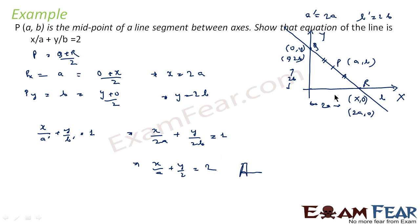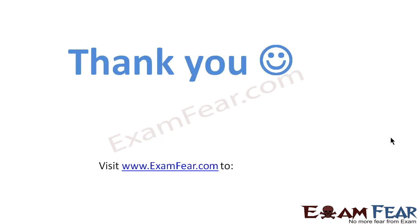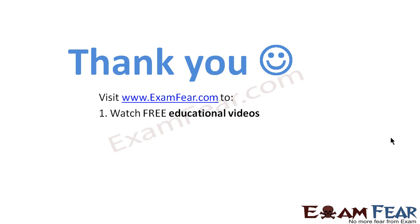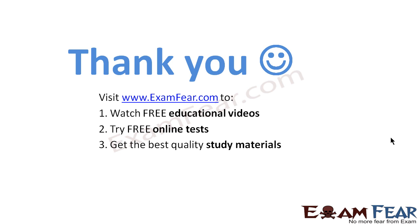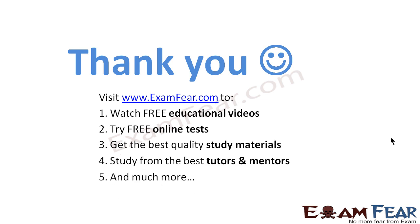Very simple — we knew that point (a, b) is the midpoint, and we found that the actual x-intercept is 2a and y-intercept is 2b. Thank you. Visit examfear.com to watch free educational videos, try free online tests, and get the best quality study materials. Thanks once again.